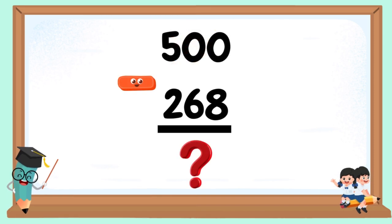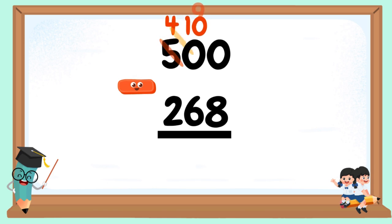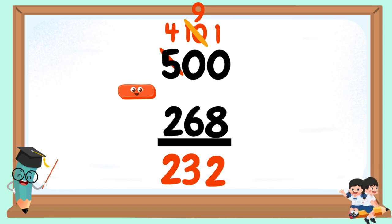500 minus 268. 8 minus 0 cannot be done. Borrow 1 ten from the 10's column, but there are 0 tens, so regroup from the 100's. 5 becomes 4 and 0 becomes 10. 8 minus 0 still cannot be done, so borrow 1 from 10: 10 becomes 9 and 0 becomes 10. 10 minus 8 equals 2. 9 minus 6 equals 3. 4 minus 2 equals 2. 232 is our difference.